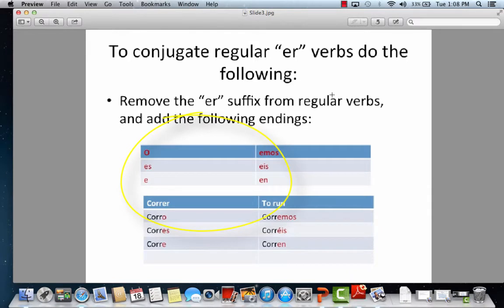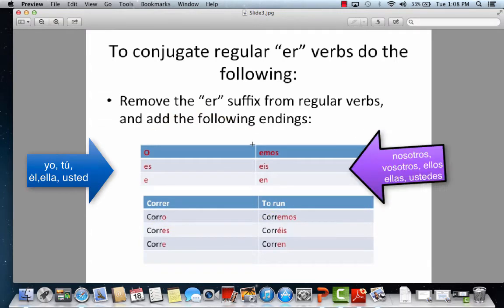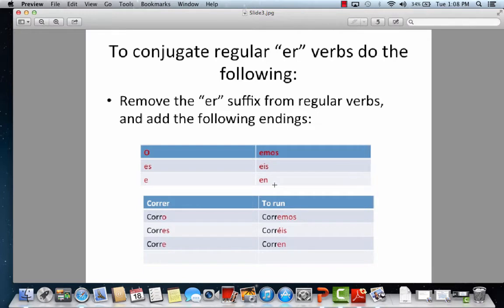Here we have the ER endings for regular verbs. The letter O is for the yo form. S is for the to form. E is for the he, she, usted form. Emos is for the we form. Eis is for the vosotros form. And N is for the day form or you all form. Remember, in Latin America, we use the EN for you all form.